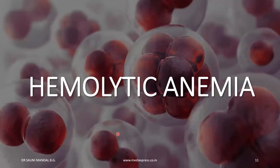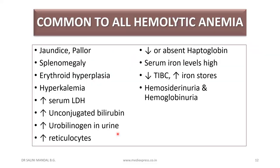Coming to hemolytic anemias, features common to all include jaundice and pallor, splenomegaly, erythroid hyperplasia with expansion of marrow space and bossing of the skull, hyperkalemia, increased serum LDH, increased unconjugated bilirubin, increased urobilinogen in urine, increased reticulocytes, decreased or absent haptoglobin, high serum iron levels, decreased TIBC, increased iron stores. Hemosiderinuria and hemoglobinuria are especially seen in intravascular hemolysis.